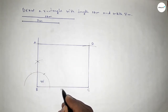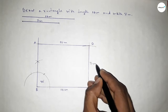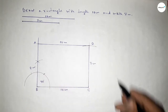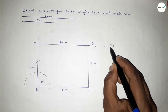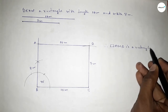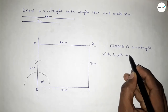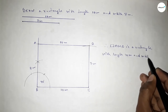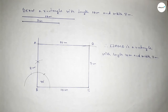Taking here point A. This side is 10 centimeter, this side 10 centimeter, this side 7 centimeter, and this side 7 centimeter. Therefore, rectangle ABCD is a rectangle with length 10 centimeter and breadth or width 7 centimeter. That's all. Thanks for watching — if this video is helpful to you, please share it with your friends.